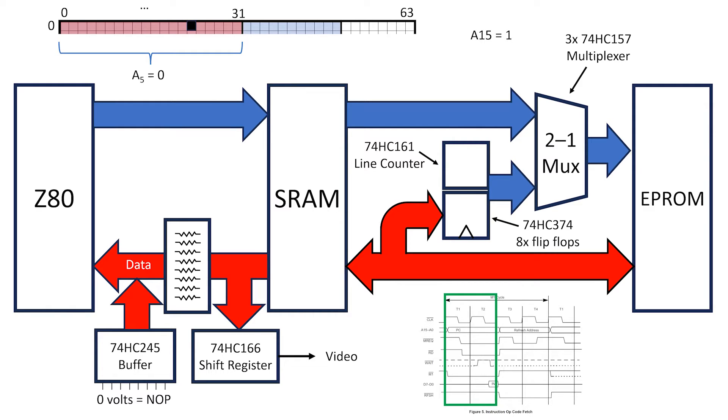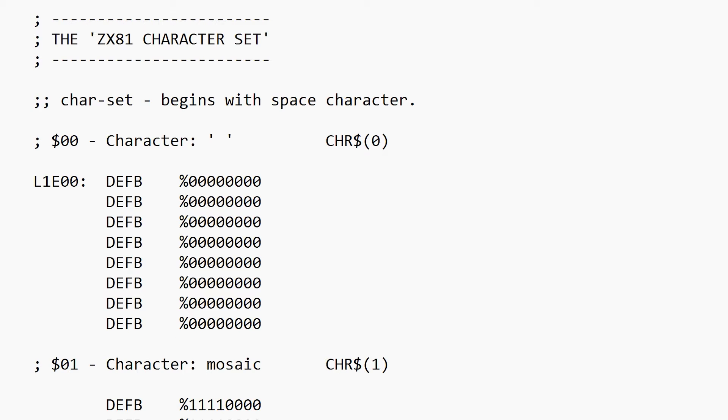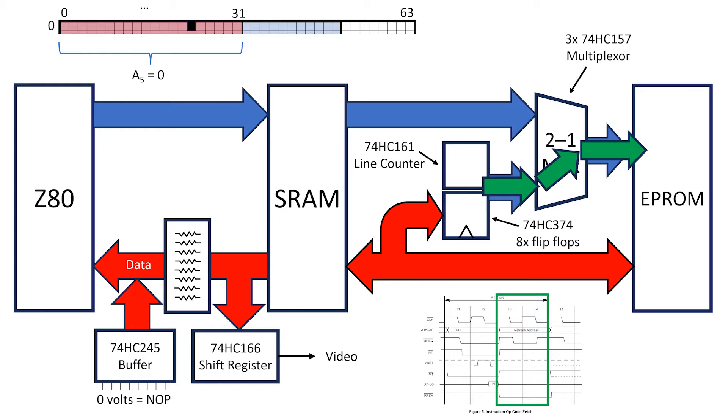We're looking at what happens during the active part of a scanline where pixels are being displayed. In the instruction fetch part of the CPU cycle, the Z80 outputs the memory address of the current character to be displayed. The NOP generator is active, so the Z80 sees a NOP, while the character data stored in the static RAM at that location is latched into the character register. The second part of the CPU instruction fetch cycle is normally used to refresh DRAM, but here we use a set of 2-to-1 multiplexers to direct the character data and line count back to the ROM, which then looks up a character bit mask table. The 8 pixels for that character and line number are fetched, and sent to the shift register to generate the video for display.